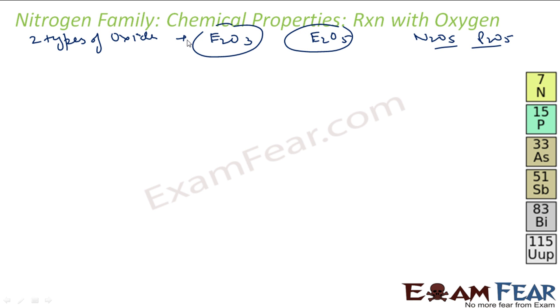For a given element, the oxide in higher oxidation state is more acidic than oxides in the lower oxidation state. If you see in this case the oxidation state is plus 3. In this case it is plus 5. So this has higher oxidation state. This is more acidic.